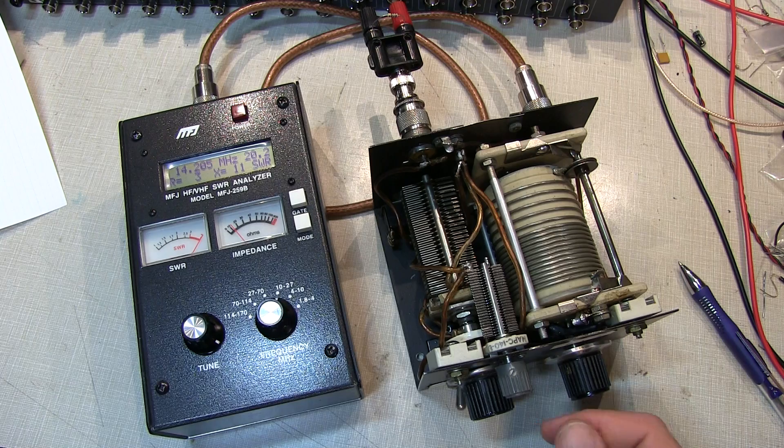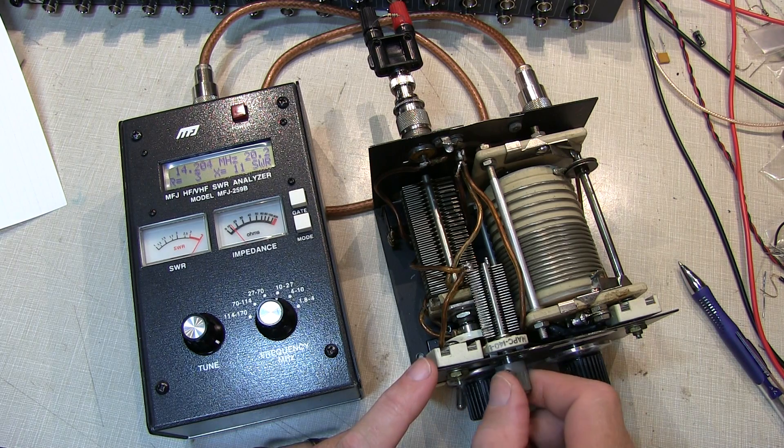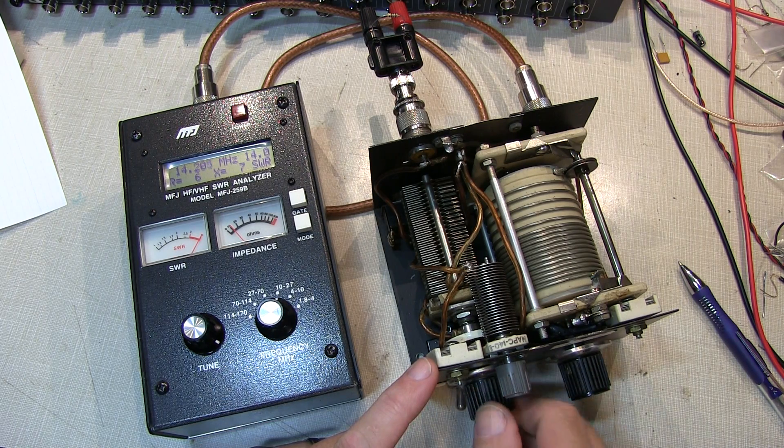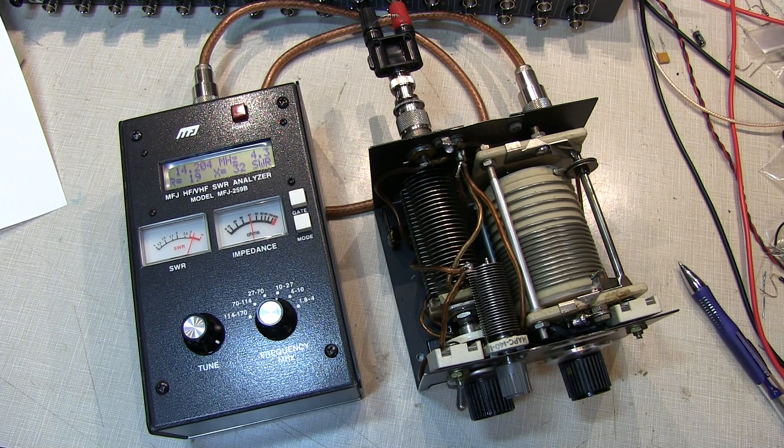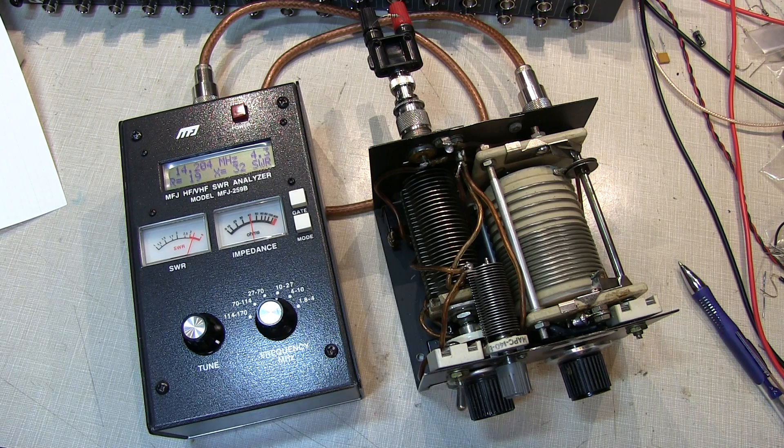Now the pi network tuner, unlike a T network, you want to kind of start with the capacitors at close to their minimum value as well as the inductor on its minimum value. So let's start with that there and see if we can get a good match.